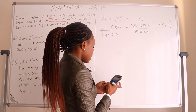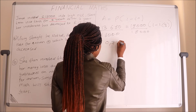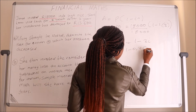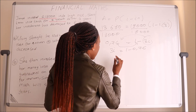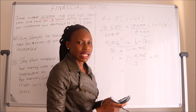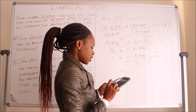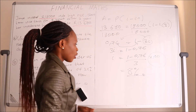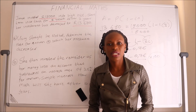Thirteen thousand six hundred and eighty divided by eighteen thousand gives zero point seven six. So we have zero point seven six equals one minus three I. Rearranging: three I equals one minus zero point seven six. Therefore I equals (one minus zero point seven six) divided by three, multiplied by one hundred — because we need the interest rate as a percentage. That gives zero point zero eight multiplied by one hundred, which is eight percent. So the interest rate used was eight percent, which was decreasing her investment rather than growing it.